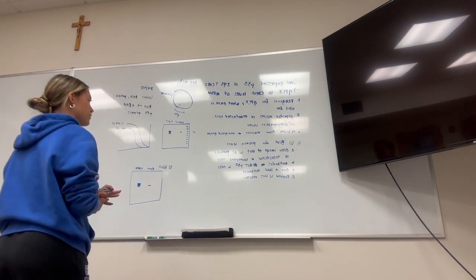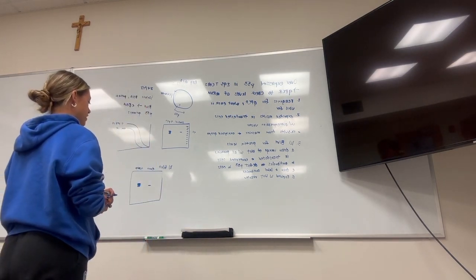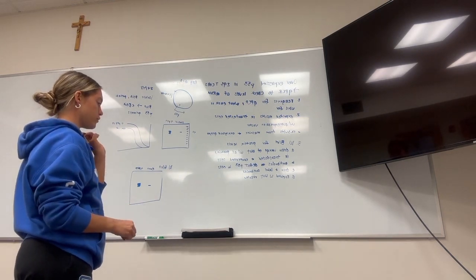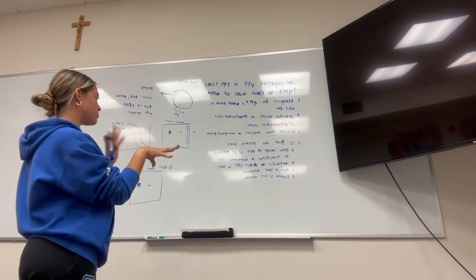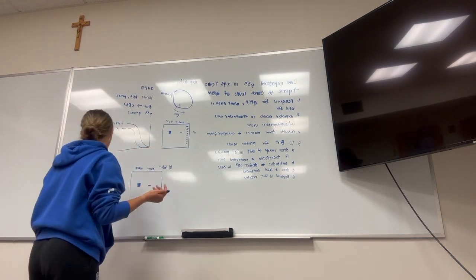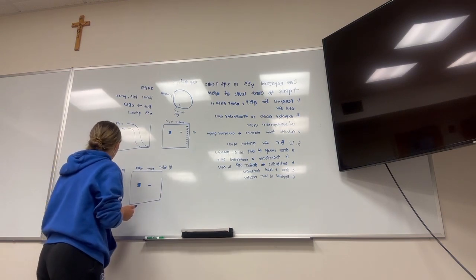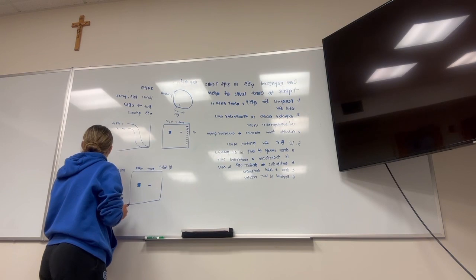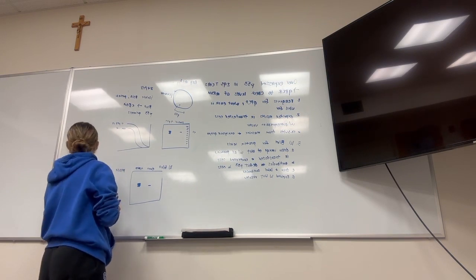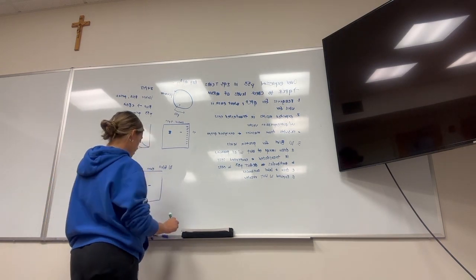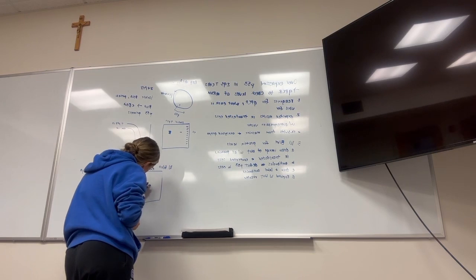For this we're going to need to create antibodies. Antibodies go after foreign things in the body, so it's going to go after the antigen. For this experiment we're going to have mouse anti-human p53, and p53 is the antigen. That's going to be our primary antibody, and we're going to have it right on top.